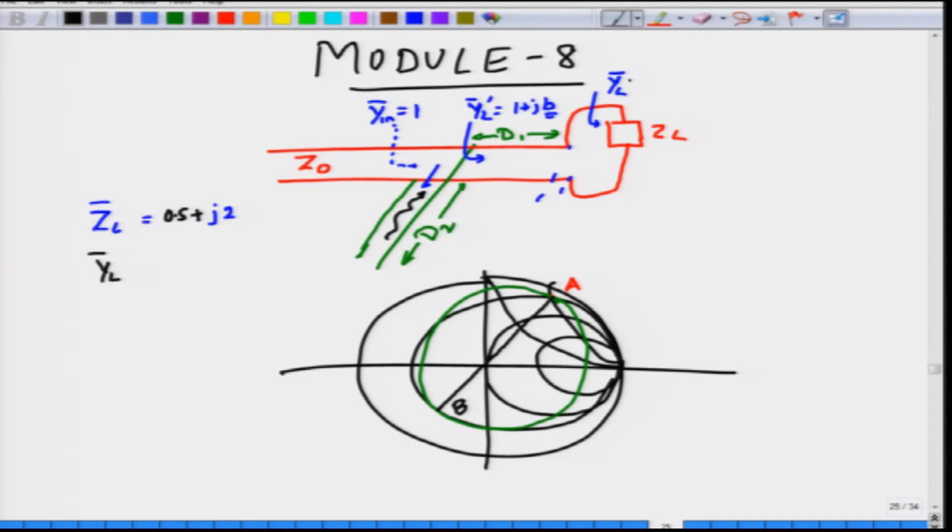Point B is where you are actually looking at YL bar and now on this constant SWR circle, you have to move until you reach or you reach the point C where you are actually landing between the intersection of this R equal to 1 circle and the SWR circle. You look at this blue circle which is R equal to 1 and this circle which is green circle which is point C and at point C you have something like 1 plus J, maybe this is 3 or something. Now, I am not obtained the correct answers here, maybe it is J2.2 something, you can find out what exactly is the value here after you have drawn the constant SWR circle. Point C would correspond to YL bar.